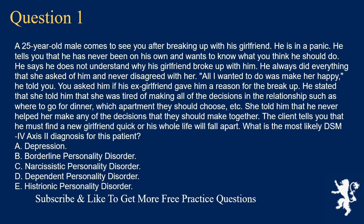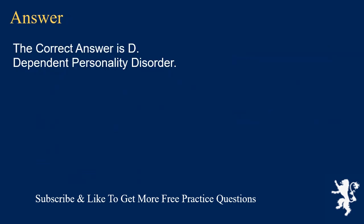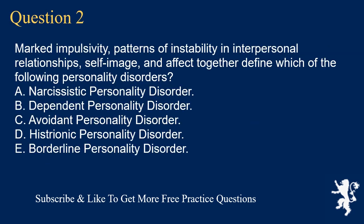You asked him if his ex-girlfriend gave him a reason for the breakup. He stated that she told him she was tired of making all of the decisions in the relationship, such as where to go for dinner, which apartment they should choose, etc. She told him that he never helped her make any decisions they should make together. The client tells you that he must find a new girlfriend quick or his whole life will fall apart. What is the most likely DSM-4 Axis 2 diagnosis for this patient? A. Depression. B. Borderline personality disorder. C. Narcissistic personality disorder. D. Dependent personality disorder. E. Histrionic personality disorder. The correct answer is D. Dependent personality disorder.